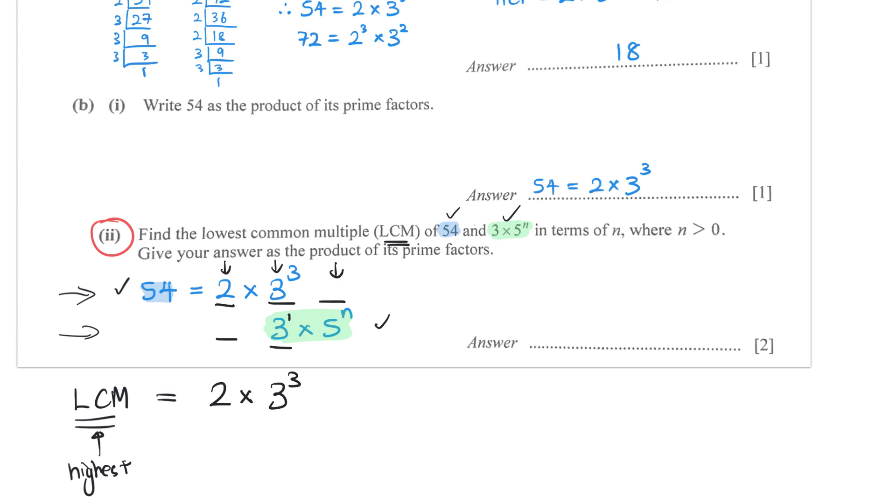Lastly, I have no factor of 5 on top, but I have a factor of 5 to the power of n. I will also take 5 to the power of n. Now, this technically is the lowest common multiple when I multiply everything out.